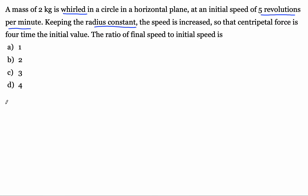A mass of 2 kg is whirled in a circle in a horizontal plane at an initial speed of 5 revolutions per minute. Keeping the radius constant, the speed is increased so that the centripetal force is 4 times the initial value. Now you have to find out the ratio of final speed to initial speed.